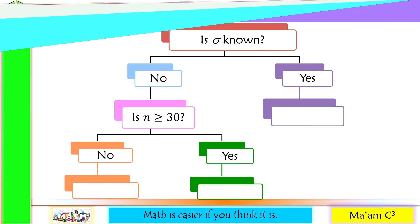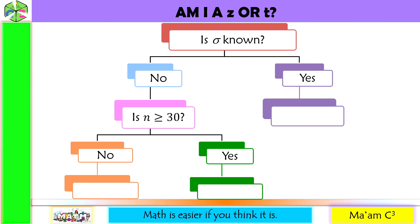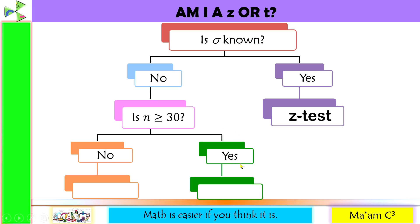Let's have a quick activity: Am I a Z or T? If you are given the population standard deviation, you are going to use Z-test. If you are not given the population standard deviation but your sample size is greater than or equal to 30, then you are going to use Z-test. But if the population standard deviation is unknown and the sample size is less than 30, then you are going to use T-test.